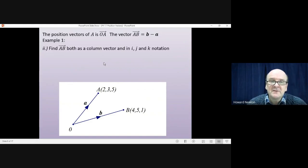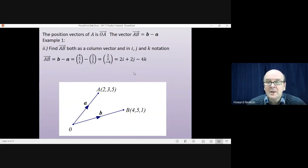Part two asks us to find the vector AB, both as a column vector and in i, j and k notation. Well, the vector from A to B is the position vector of B take away the position vector of A. Which would be 4, 5, 1 take away 2, 3, 5. Which as a column vector would be 2, 2, minus 4. And in i, j and k notation would be 2i plus 2j minus 4k.